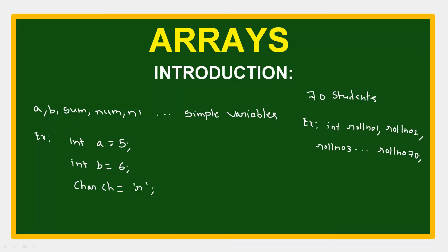If we want to store 100 students, we need 100 variables. It would be complex and time-consuming to write code to manipulate these variables. Think of how you would assign values to 70 variables, and what if we need to deal with 500 students? The answer is simple — the best way is to use an array to store the 500 student roll numbers.